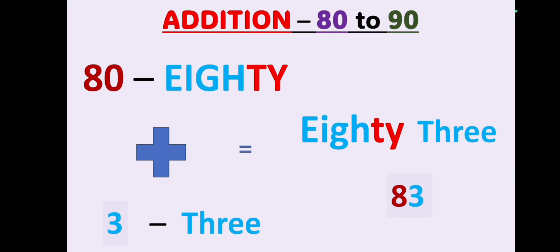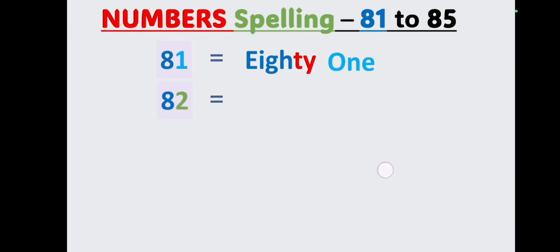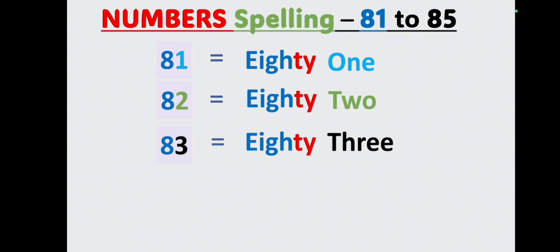Now we'll learn the numbers along with their spelling. 81: E-I-G-H-T-Y O-N-E, 81. 82: E-I-G-H-T-Y T-W-O, 82. 83: E-I-G-H-T-Y T-H-R-E-E, 83. Come on students, let's repeat with me loudly so you learn things on the go. 84.